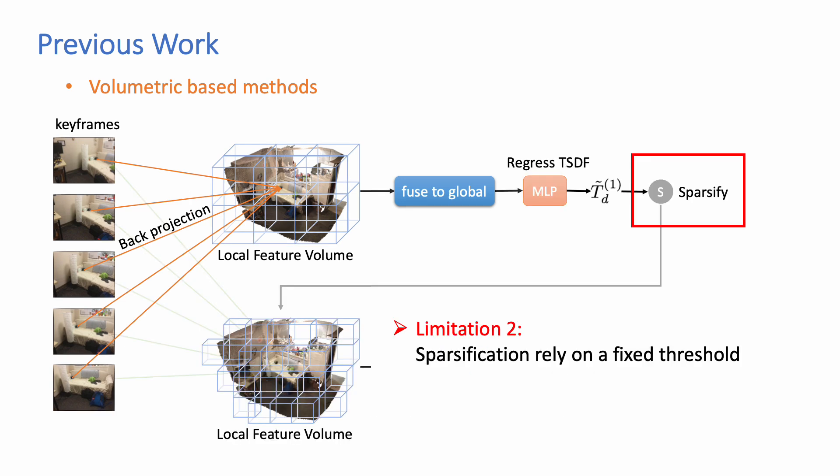In addition, their sparsification relies on a fixed threshold, which tends to remove scene structures at coarse layer.